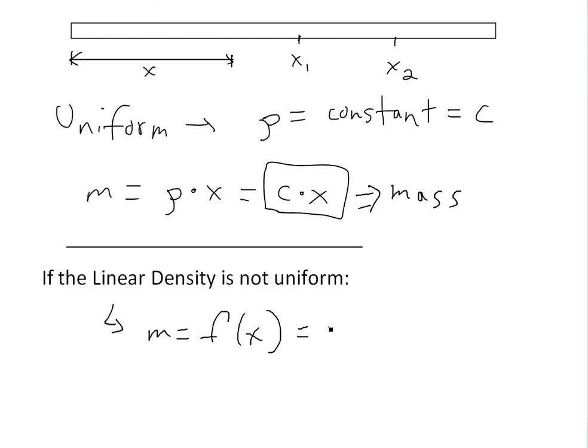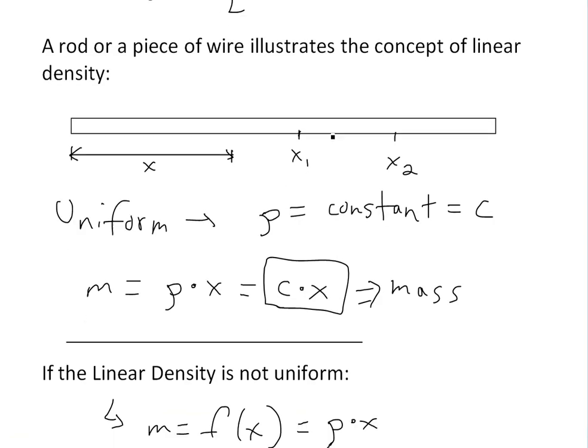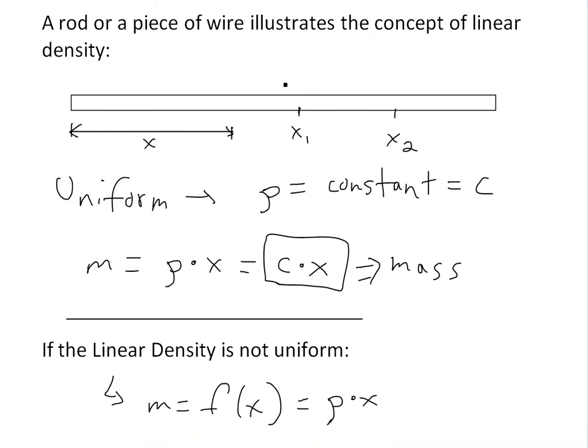In this case, it's still going to be rho times x, but now it's not a constant. So to find out what this is, we'll first have to look at the average density. If we look at, let's say if we want to consider this range right here, this delta x.